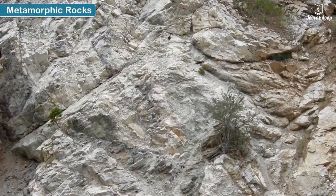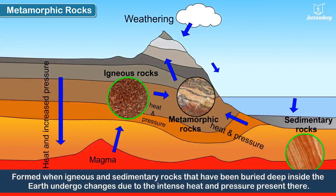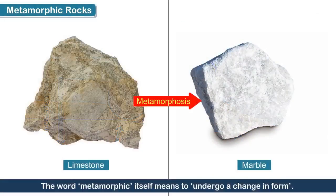Metamorphic rocks are formed when igneous and sedimentary rocks that have been buried deep inside the Earth undergo changes due to the intense heat and pressure present there. The word 'metamorphic' itself means to undergo a change in form.